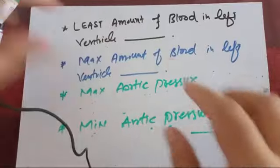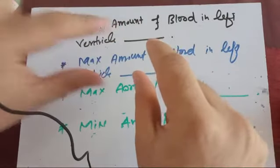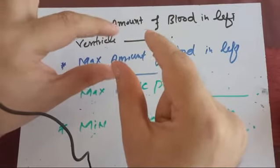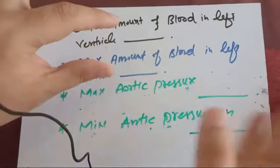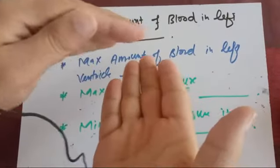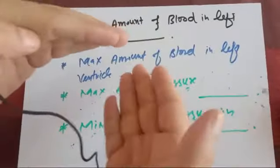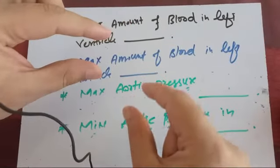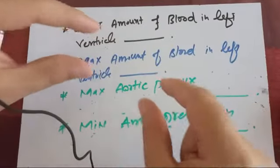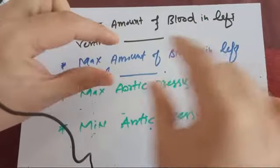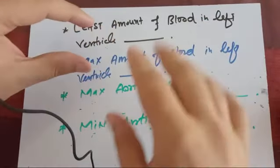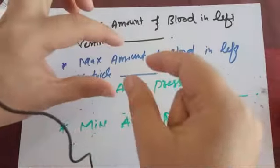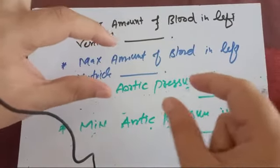The ejection phase is divided into two: the rapid ejection phase and the slow ejection phase. During rapid ejection, blood comes out from the left ventricle rapidly, raising pressure. During slow ejection, blood is still coming out, adding more pressure to blood already present in the aorta. Because pressure is being continuously added in close continuity, maximum aortic pressure occurs during the slow ejection phase. Additionally, blood has inertia and reaches maximum inertia during that phase.